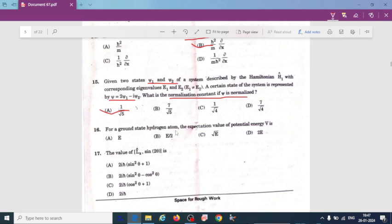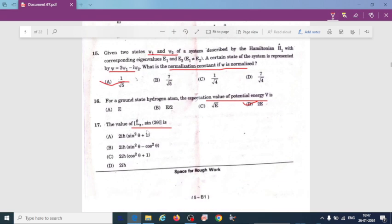For a ground state hydrogen atom, the expectation value of potential energy V is - I explained here it is two times of energy. The value of the commutation relation angular momentum along z axis sine of 2 theta is 2 i h cross sine square theta minus cos square theta.